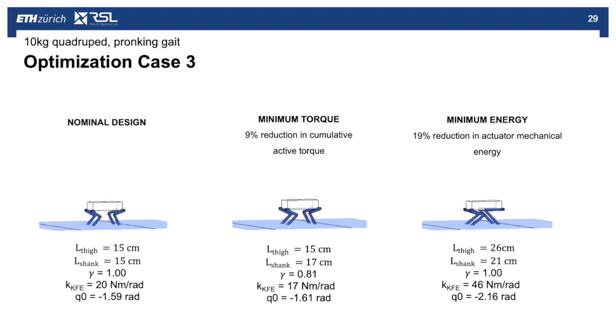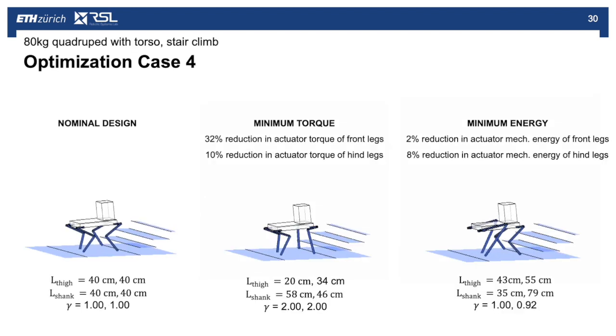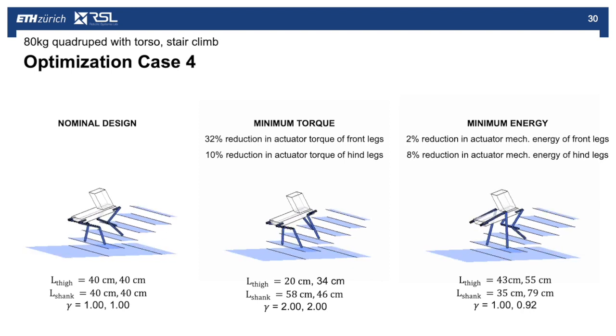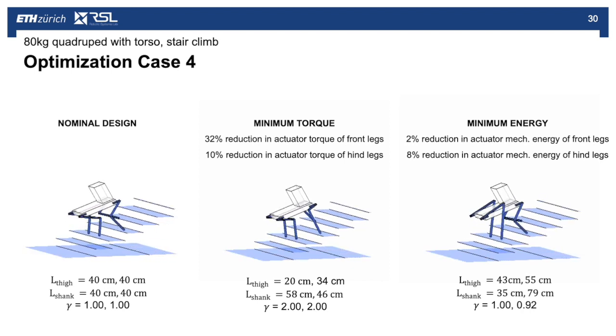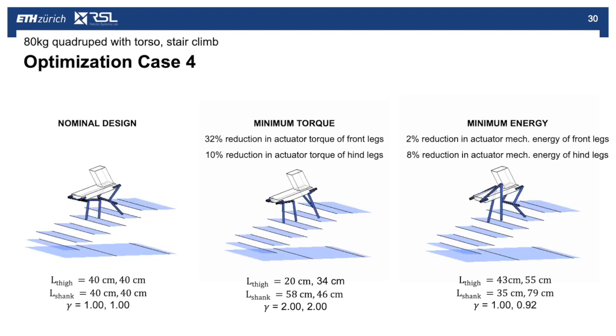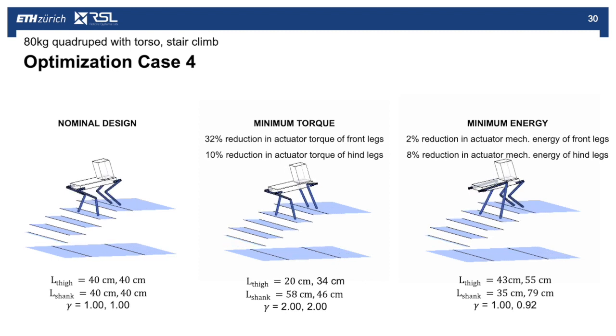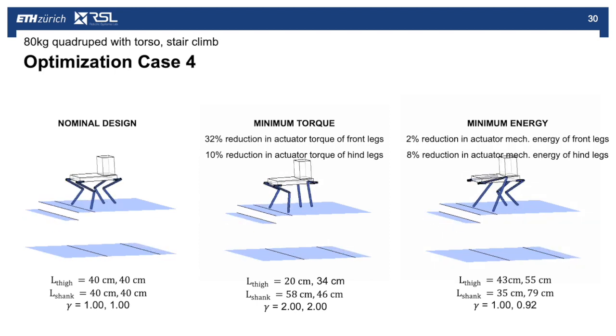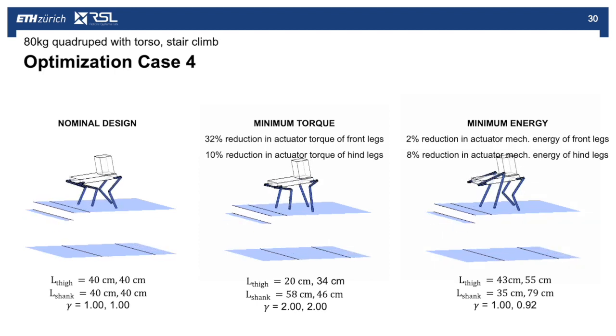Next we look at a 10 kilogram quadruped robot which is climbing stairs. For this robot we consider only the link lengths and the transmission ratio; we don't include springs. Again we optimize for a minimum torque and a minimum energy, and here we consider different designs for the front and hind legs.